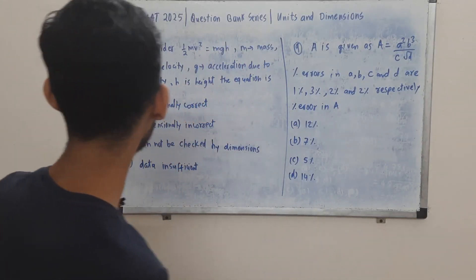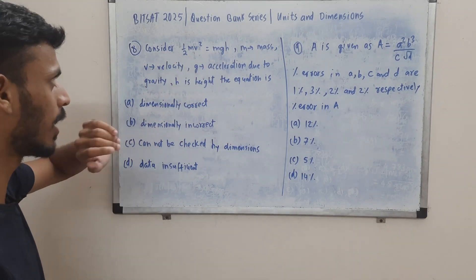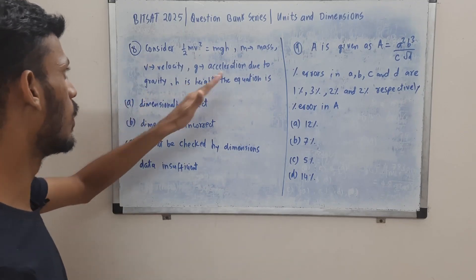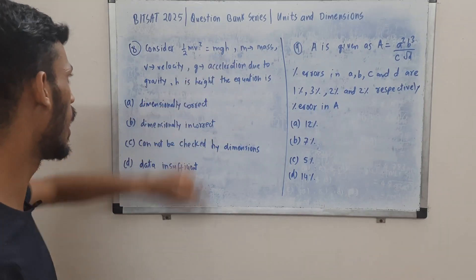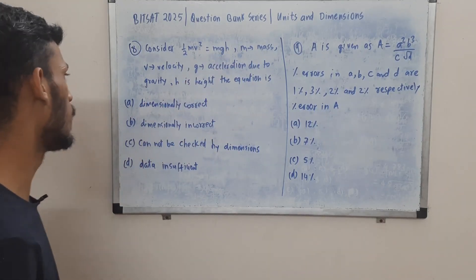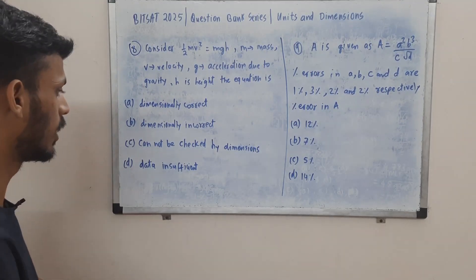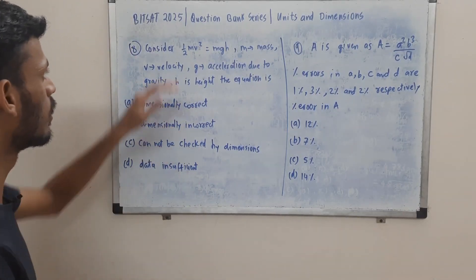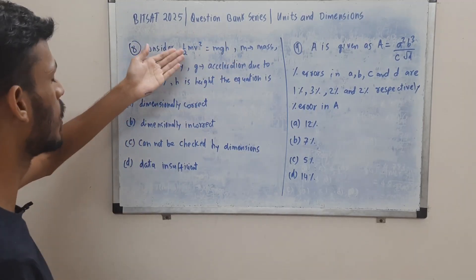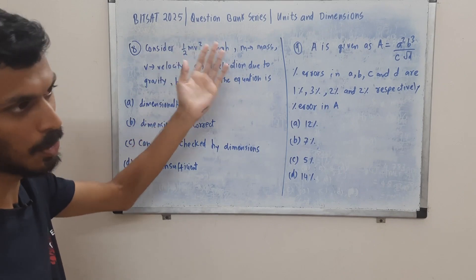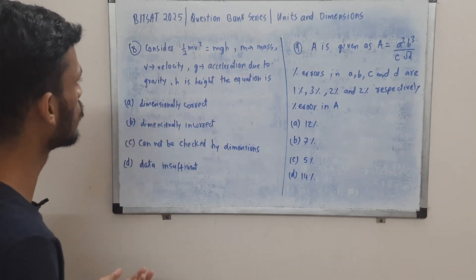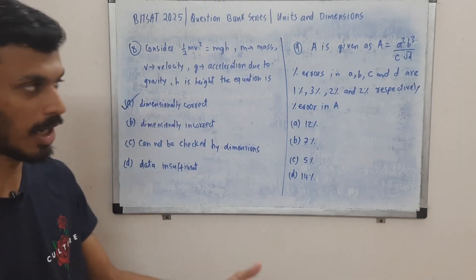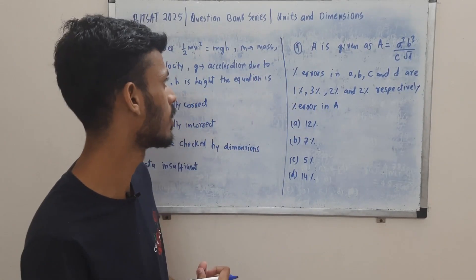Question 8: we are given the equation ½mv² = mgh, where all quantities have their usual meaning — mass, velocity, acceleration due to gravity, and height. We are supposed to comment whether the equation is dimensionally correct. Both sides represent energy: left side is kinetic energy ML²T⁻², right side is mgh also giving ML²T⁻². So the equation is dimensionally correct — option A.